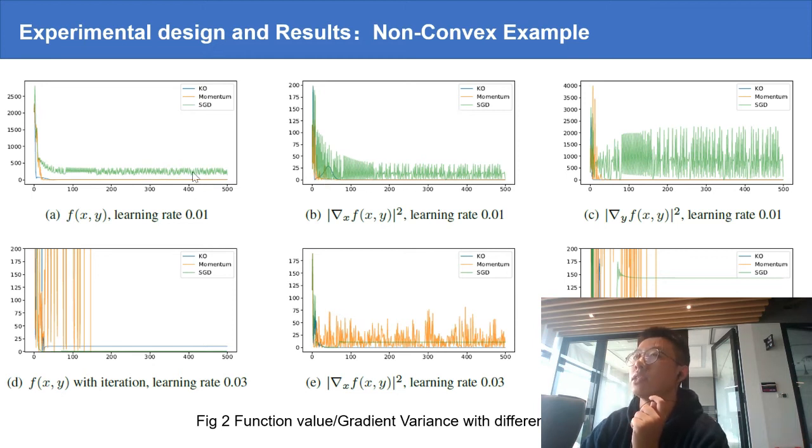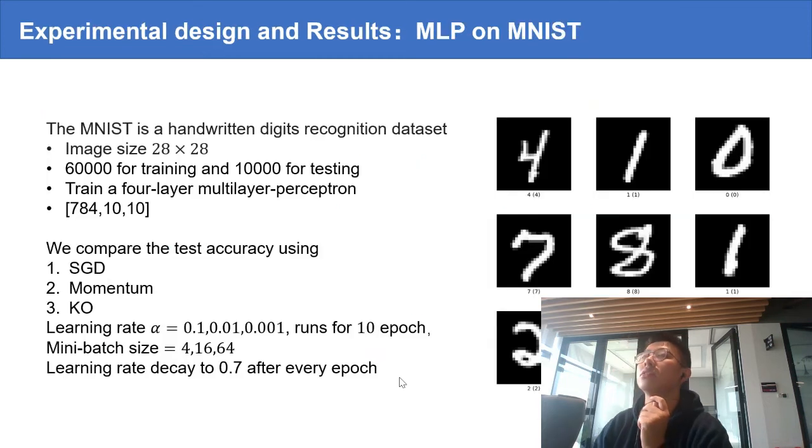For the large step size case, the momentum method diverges and introduces additional variance to the gradient. You can see that in the orange curves, the variance for the momentum method is dramatically large.